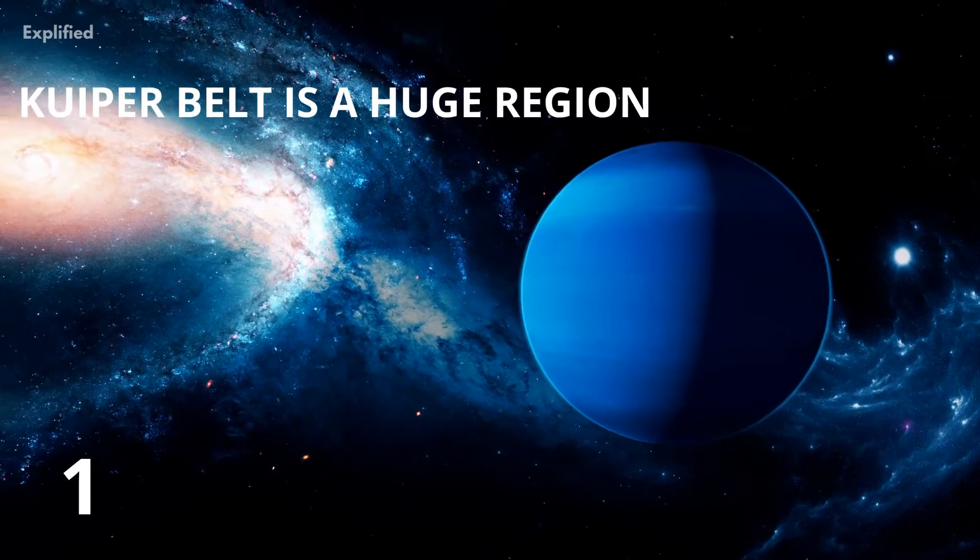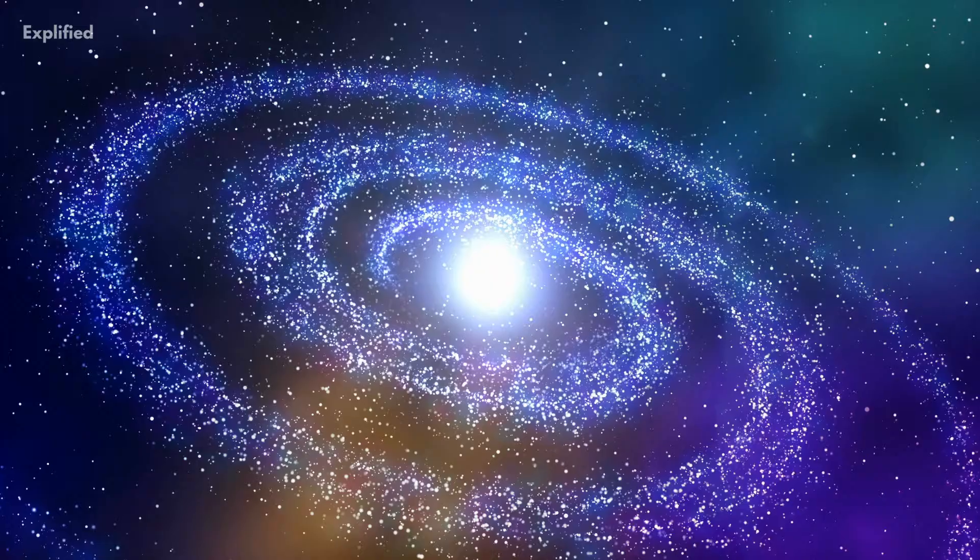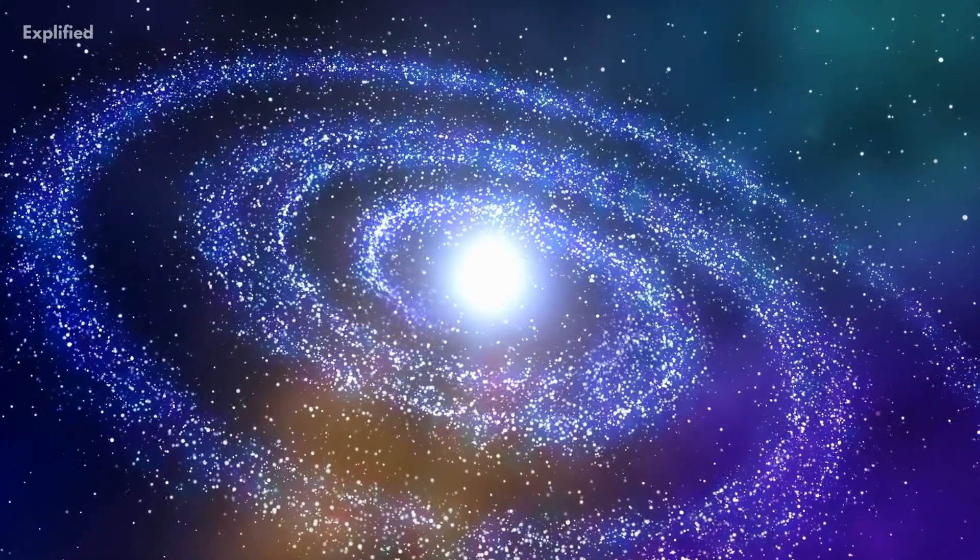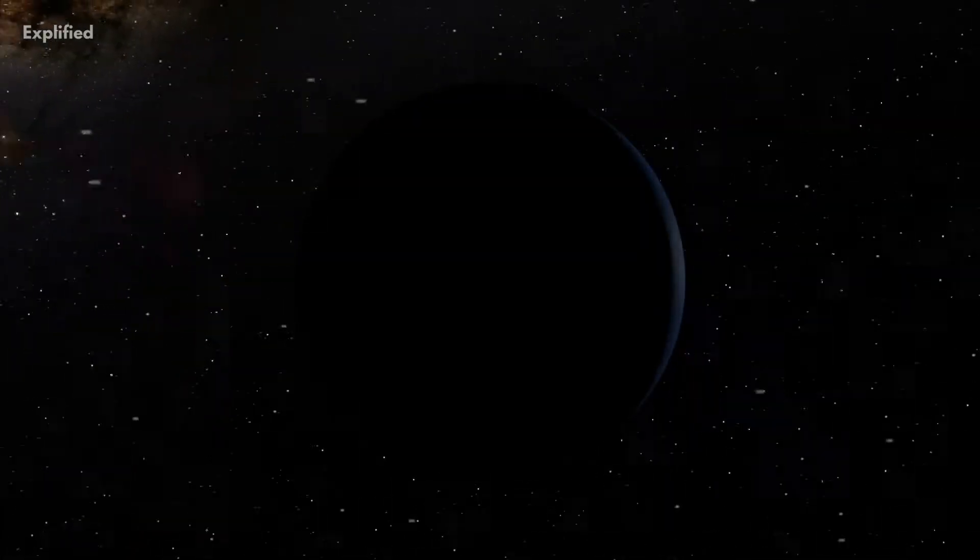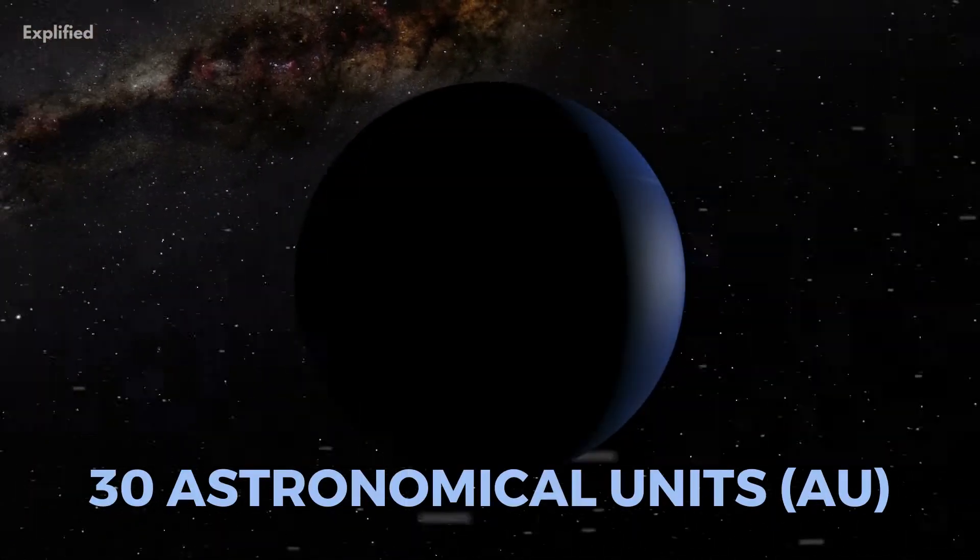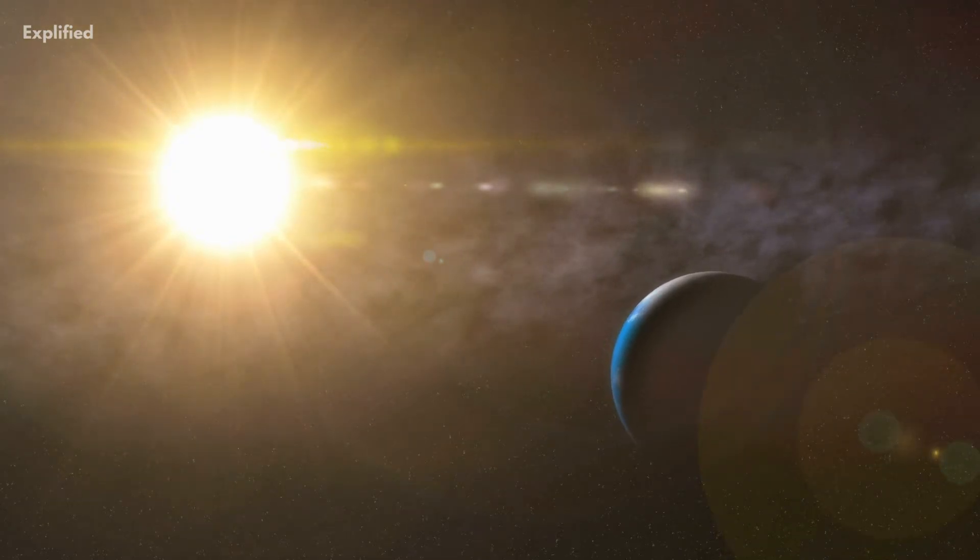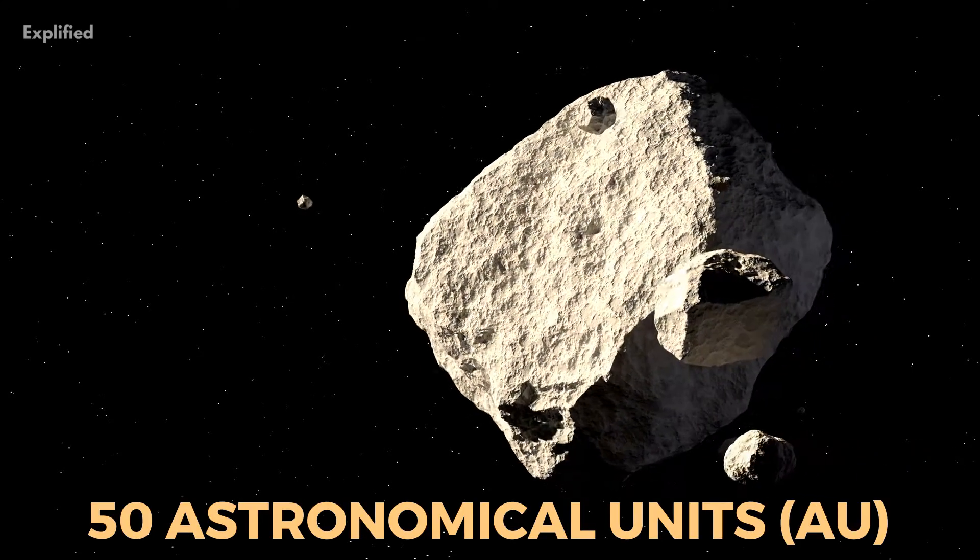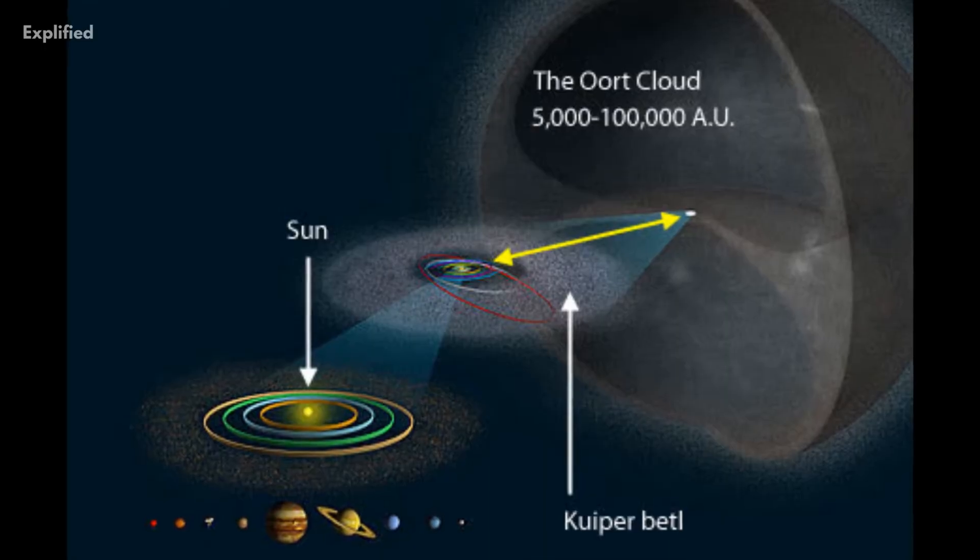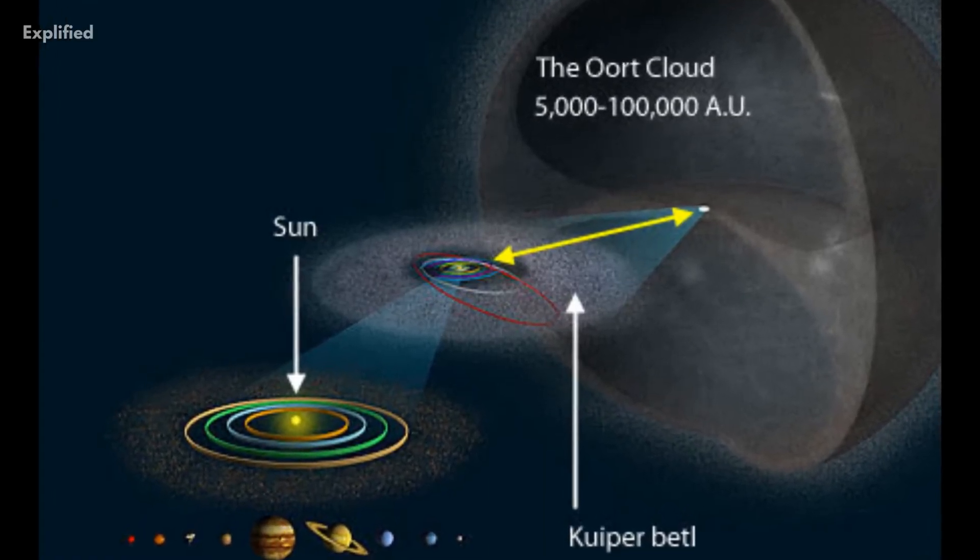Number 1. Kuiper Belt is a huge region beyond Neptune. The Kuiper Belt is one of the largest objects of our solar system. It begins at the orbit of Neptune at about 30 astronomical units, or 30 times the distance between the Sun and Earth. The main region extends up to 50 astronomical units. This belt, however, should not be confused with the Oort Cloud, which is farther and larger.